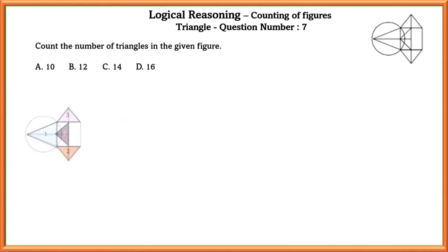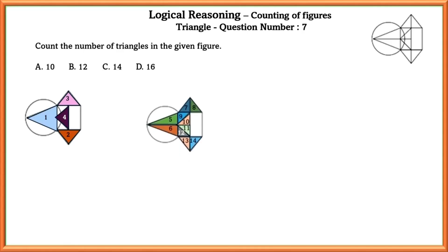Question number seven: count the number of triangles in the given figure. Counting the number of triangles, we get 4 plus 10, which equals 14.